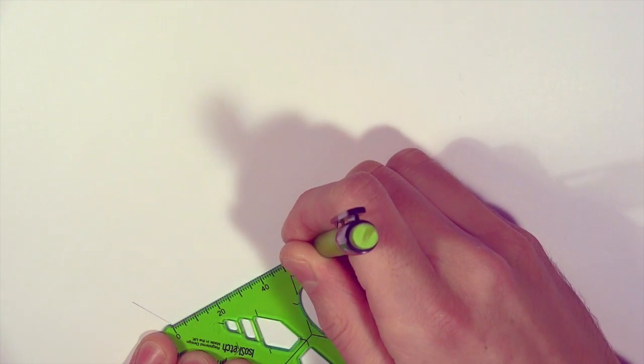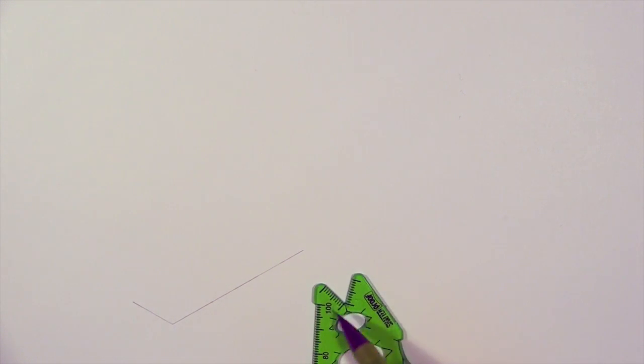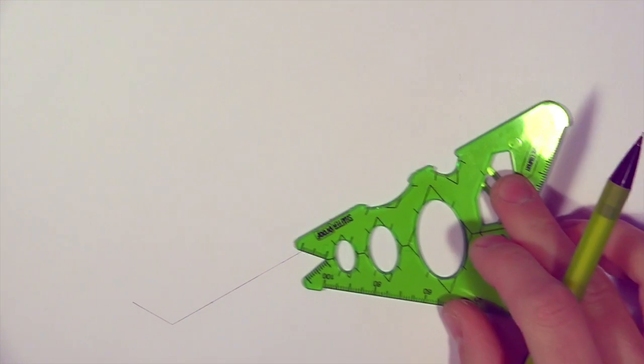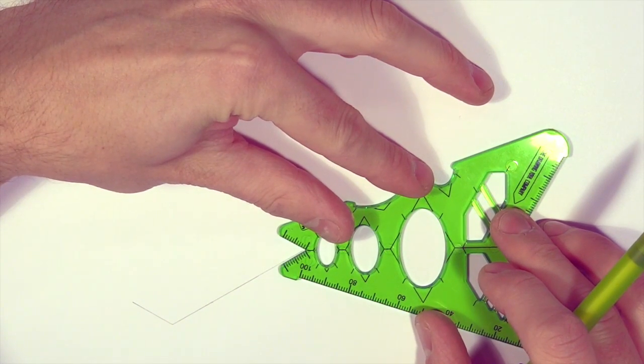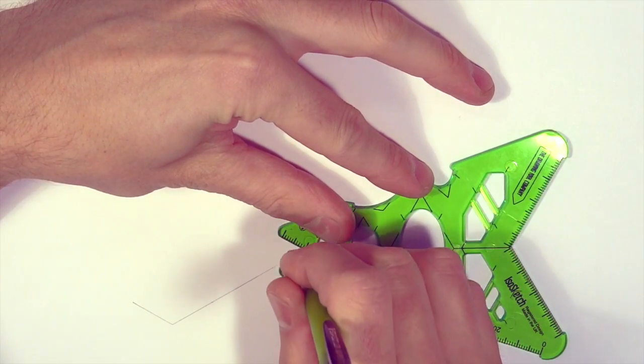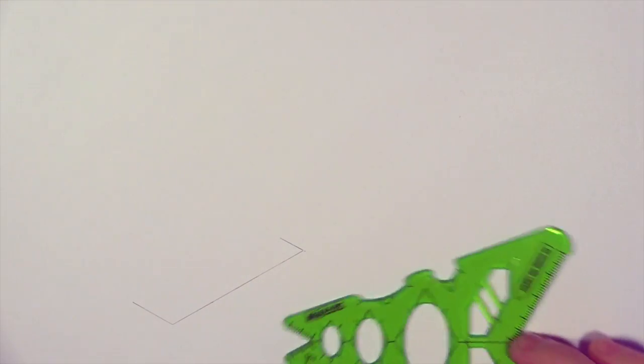But of course that depends on what length of shape you're going to draw, could be up to 100, could be more. This gives us a chance to use the mouth of Isosketch. We're just going to use that to give us a little corner on this end, just using 10 millimeters there to give ourselves a little reference point.